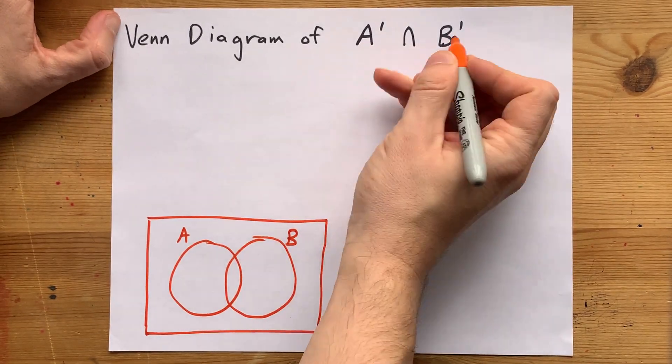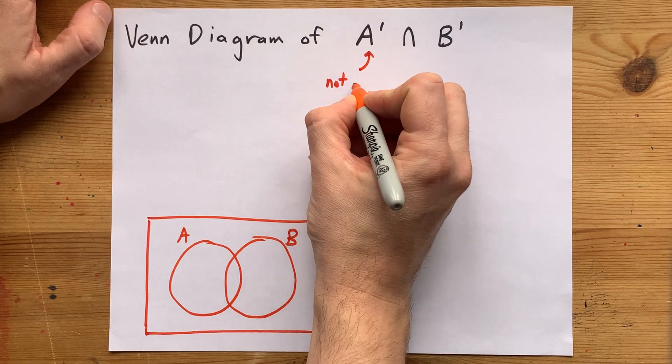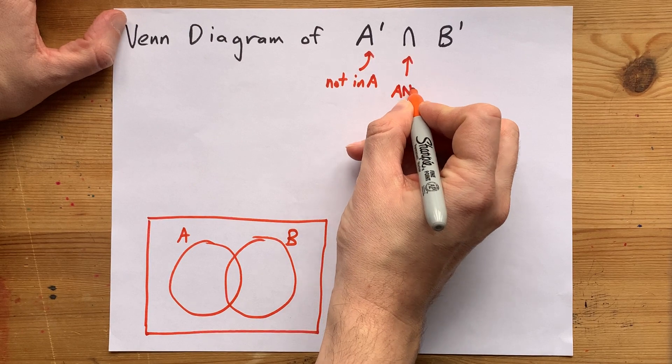The first way is reading it as is. A complement is math code for not inside of A. Intersect is code for and.